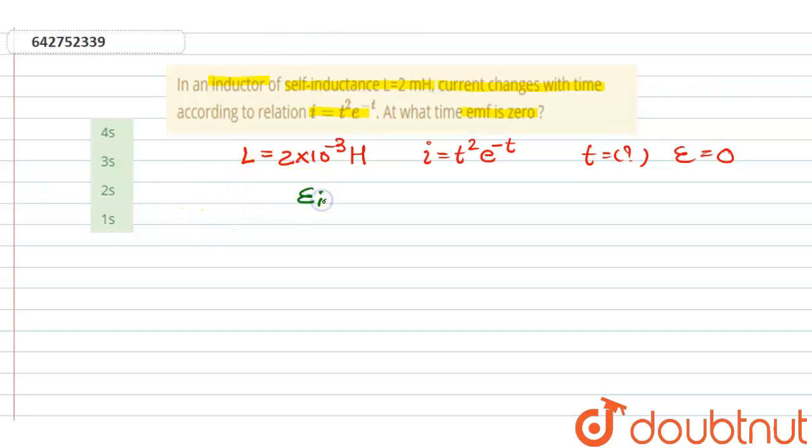We know the formula for induced emf, which is minus L di by dt. So here, minus L di is t square, this is i, t square e power minus t upon dt.